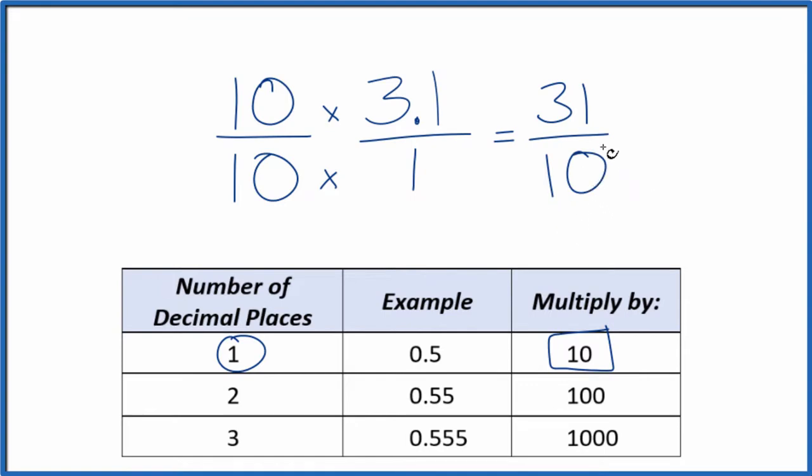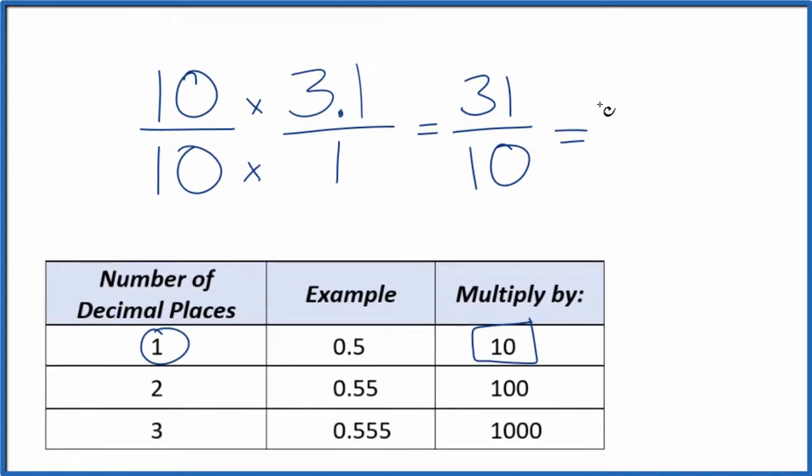This is an improper fraction. You might want to change it to a mixed fraction. So 10 goes into 31 three times with one left over. So call it 1 tenth.